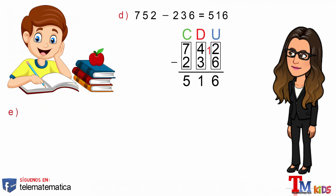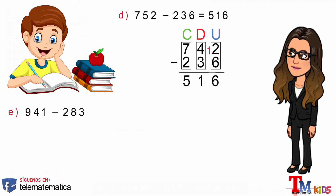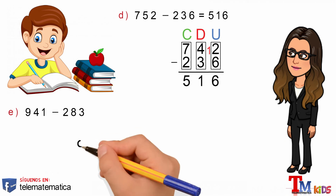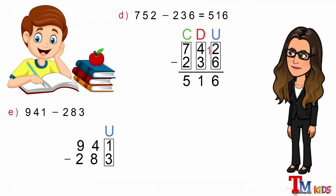Y como último literal: 941 menos 283. En primer lugar, escribimos los números verticalmente teniendo en cuenta que el minuendo se coloca encima y el sustraendo debajo. En segundo lugar, identificar la columna de las unidades y restar. Pero no podemos restarle 3 al 1, entonces le pedimos una prestada a la decena: el 1 se transforma en 11 y el 4 se transforma en 3. Luego restamos: 11 menos 3 es igual a 8.